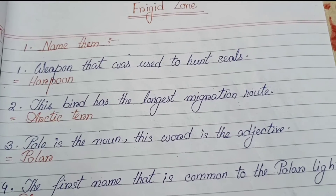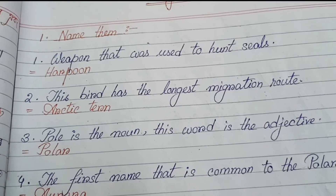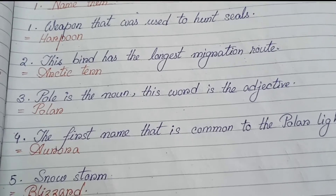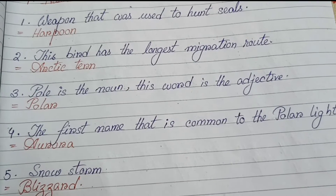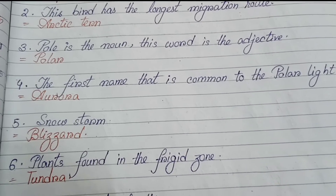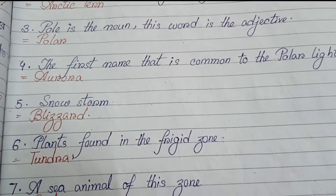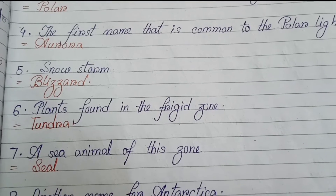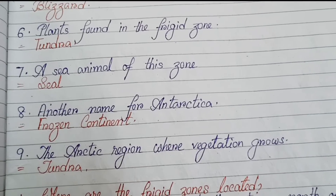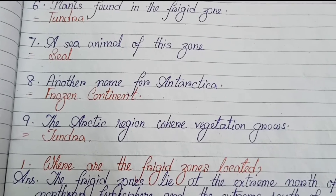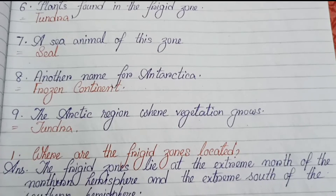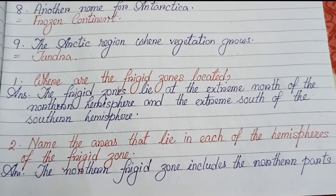Objective type question answers. Number one: weapon used to hunt seals — harpoon. Number two: bird with the longest migration route — arctic tern. Number three: pole is a noun, the adjective form is polar. Number four: the first name common to polar light — aurora. Number five: snow storm — blizzard. Number six: plants found in the frigid zone — tundra. Number seven: a sea animal of this zone — seals. Number eight: another name for Antarctica — frozen continent. Number nine: the arctic region where vegetation grows — tundra.